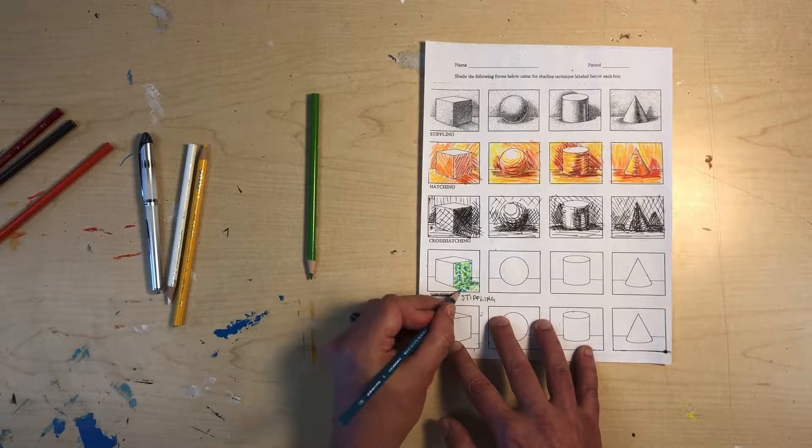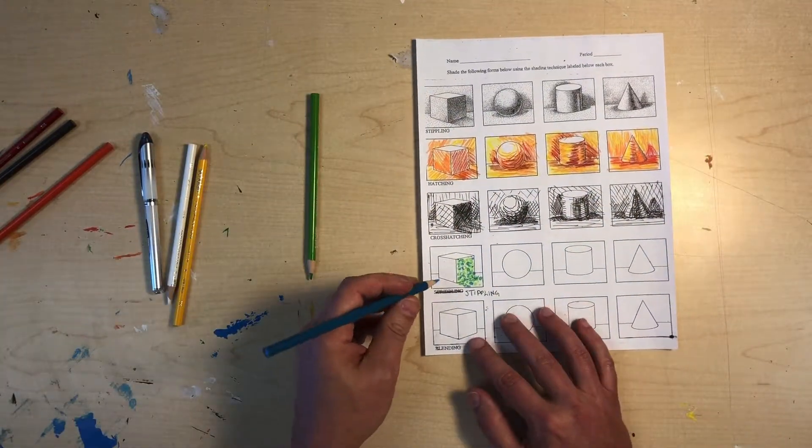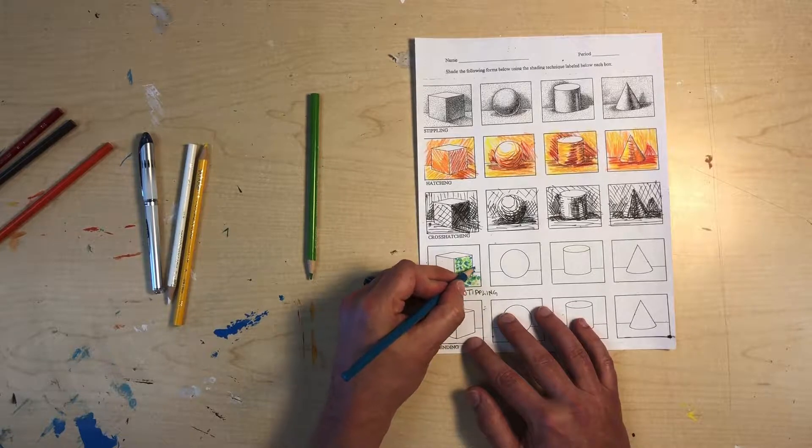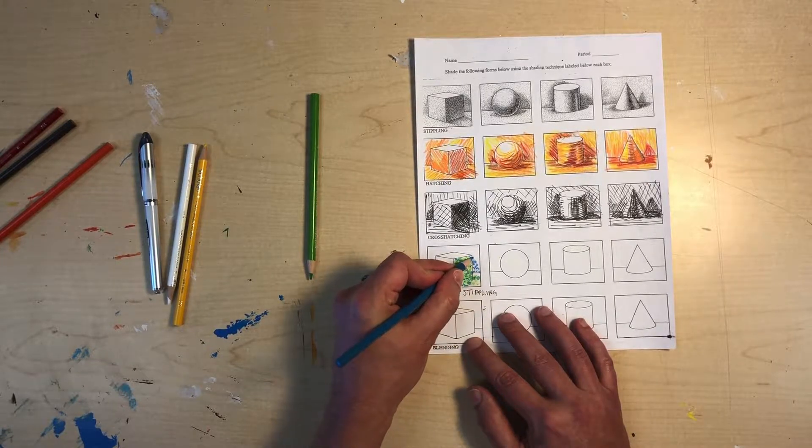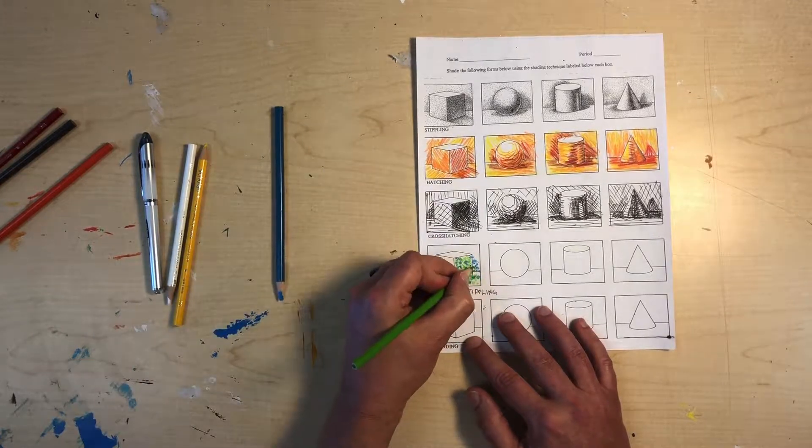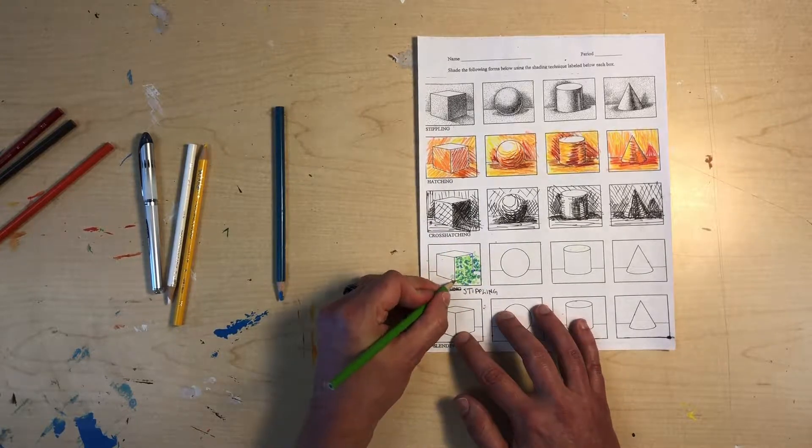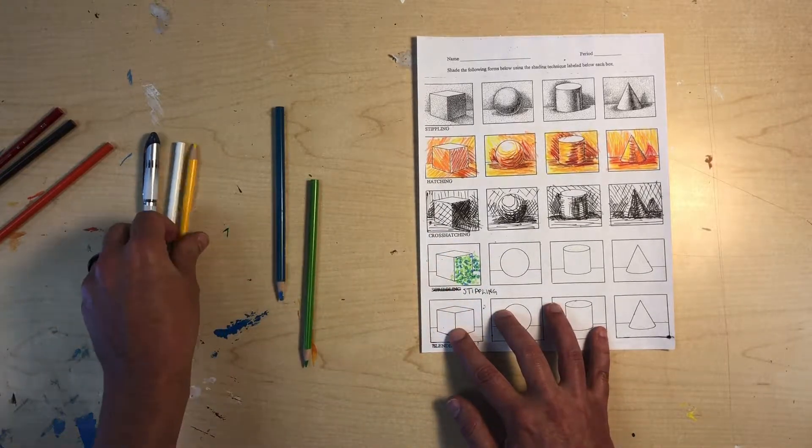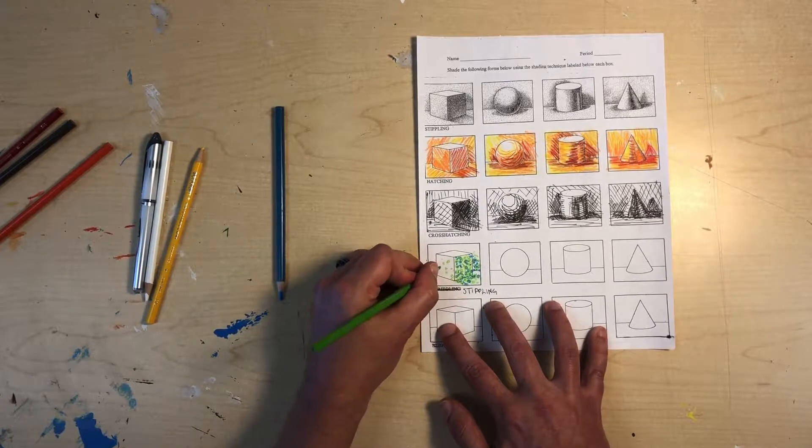And that's something that when we're drawing a still life that you'll want to do. When we put the light onto the still life you're trying to match the value of the shadows that are not only on the object but the shadows that are around the dots. I'm gonna go in here I'm gonna put the dots further apart on the lighter side.